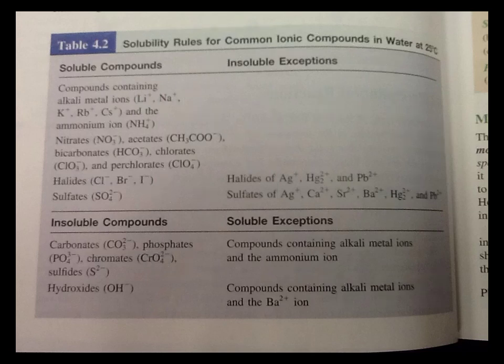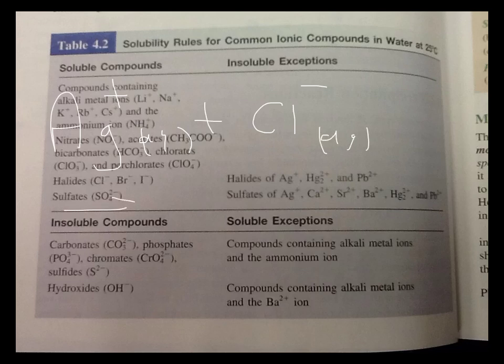So, for this reaction, because only the silver ion is reacting, we would write Ag+ (aq). And only the chloride ion is reacting, so we'd write Cl- (aq), and react to form AgCl, which is a solid.